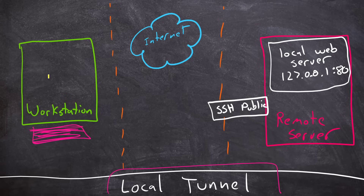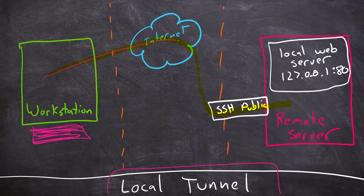So we're going to establish an SSH connection through the internet into an SSH server far away. We've established this connection and we're going to make a tunnel — a local tunnel. The opening of the tunnel will be here and it's going to go through this SSH connection that we have established. And what it does on this end, it connects to whatever we tell it to.